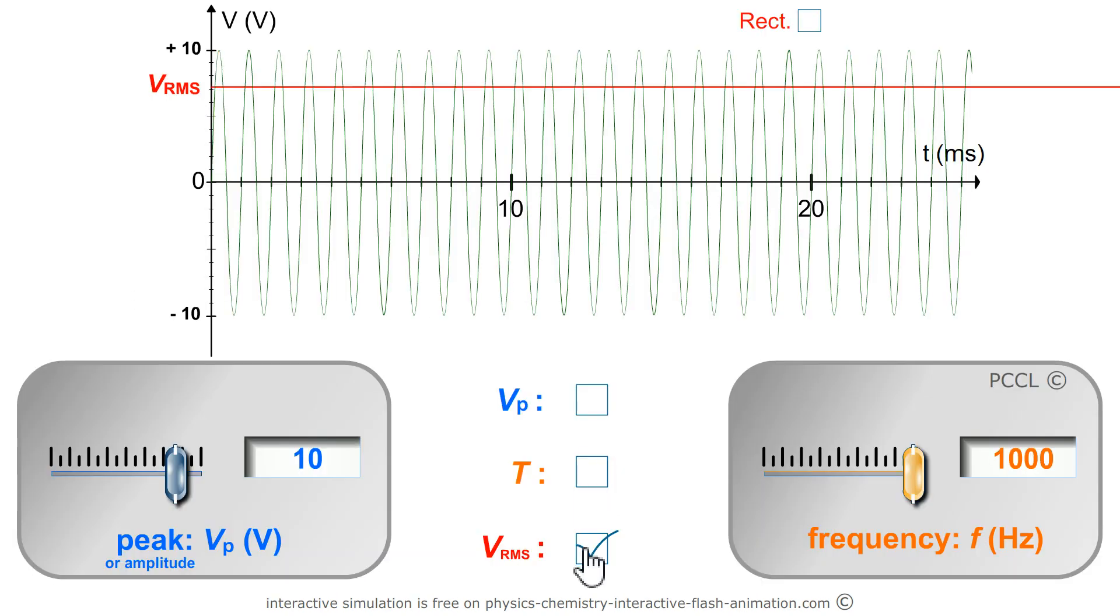Then, the RMS voltage of a sinusoidal AC waveform. Root mean square voltage. The RMS of a periodic voltage is the DC voltage that would have the same effect. Example.